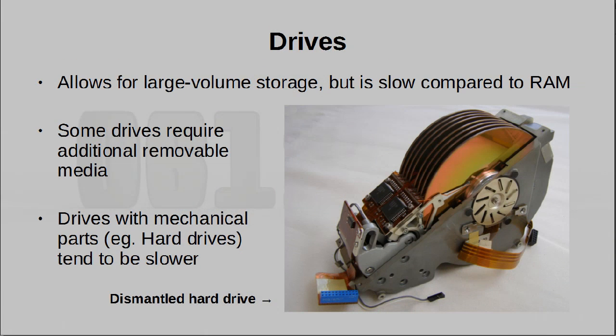Moving on, we have drives. These are necessary for you to hold information, for example on a hard disk or solid state drive. They may also allow you to put in expandable media, for example a floppy disk drive, a card reader, or a CD-ROM drive. Information can be read from these drives or written to them, and these are normally one of the slower devices on a computer, particularly if it is a hard drive or slower media like a floppy disk.